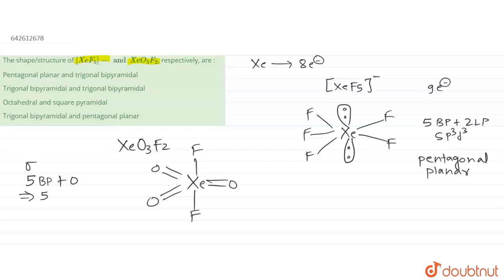So for steric number five, what is the hybridization? Hybridization is going to be sp3d, which is pentagonal bipyramidal. Why is fluorine at the axial position? Because according to VSEPR, more electronegative atoms prefer to stay at axial positions. So fluorine is more electronegative than oxygen, that's why it is at axial position.